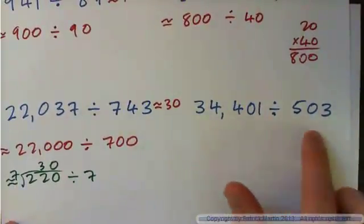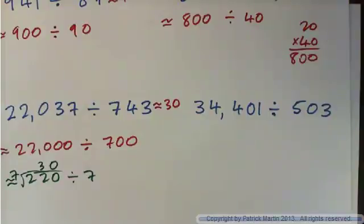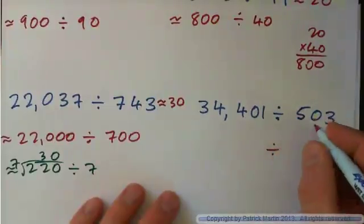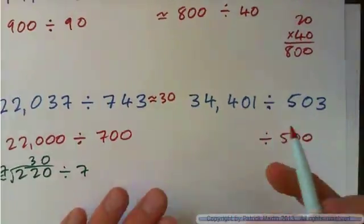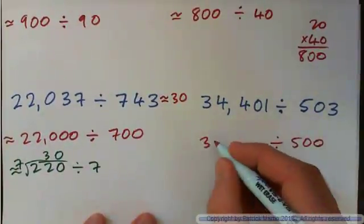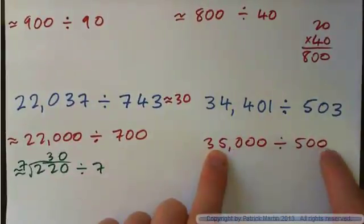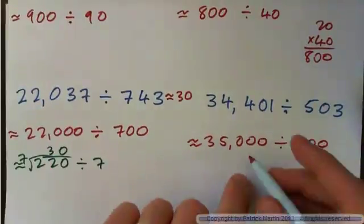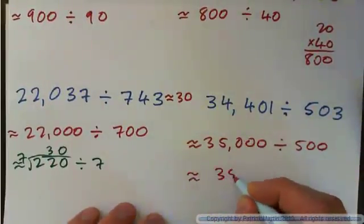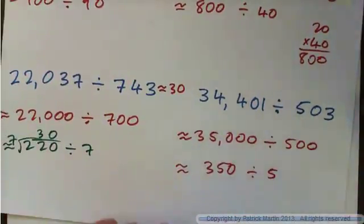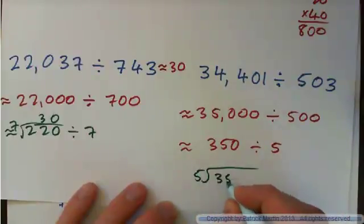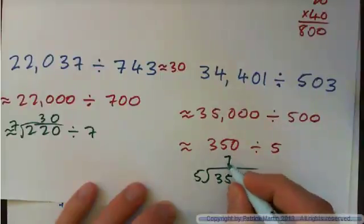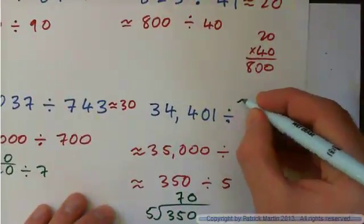Press pause and try this one yourself. So this number rounds to 500, but it's pretty close to 35,000, and this is a multiple of five. So I would say it's approximately 35,000 divided by 500. Cross two zeros off each one and you basically have 350 divided by 5. Five into 350 — that's 7 times — and 5 into 0 is 0. So this is close to 70.